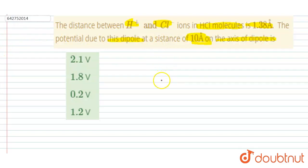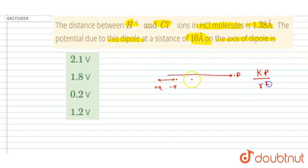This is an axial point. The potential at an axial point at a distance r is equal to kp divided by r squared. Here, the distance between the two charges is 2a, which equals 1.38 angstroms, so we convert it to meters.